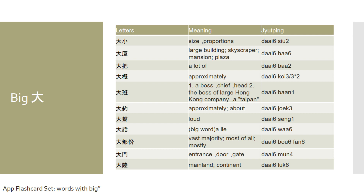If you want to refer to a large building, skyscraper, or tall residential buildings like those in Hong Kong, you would say daai ha, daai ha. If you want to say 'a lot of something,' you would say daai ba, daai ba — so if you have a lot of money, you would say daai ba chin. If you want to say 'approximately,' you would say daai koi, daai koi — for example, approximately three feet would be daai koi sam chek. Just insert any measurement after daai koi.